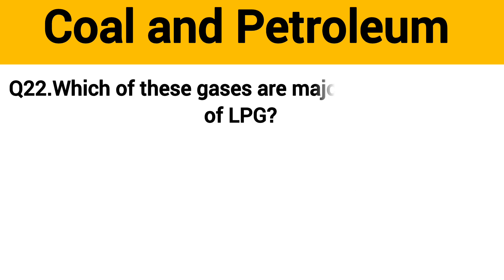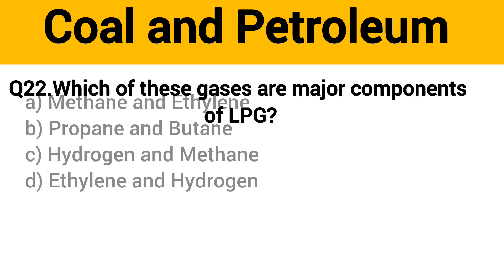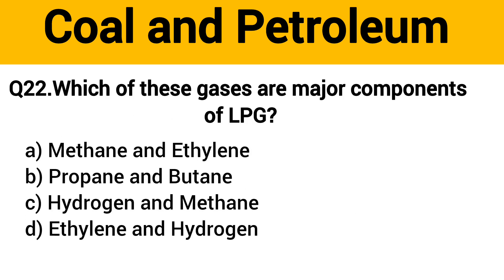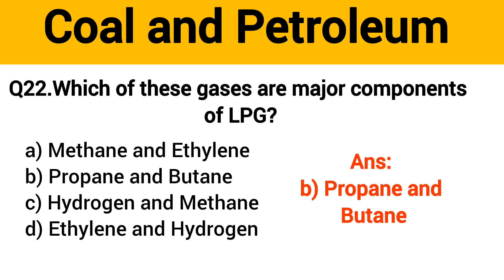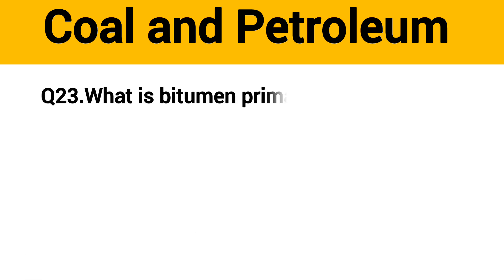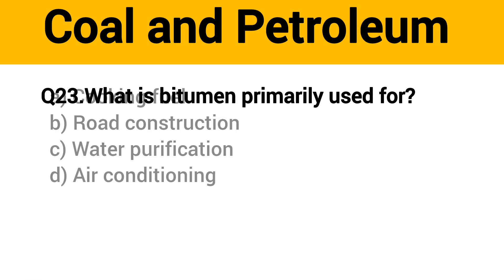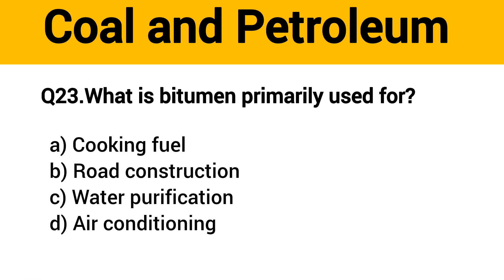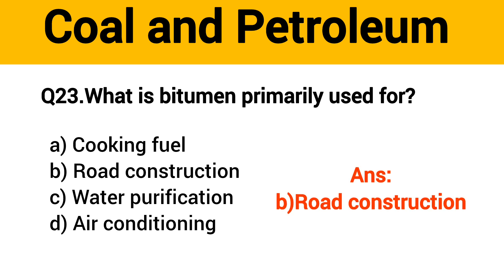Question No. 22. Which of these gases are major components of LPG? The right answer, Option B. Question No. 23. What is bitumen primarily used for? The right answer, Option B: Road Construction.